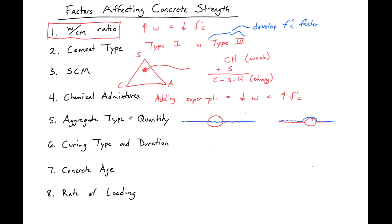We also have curing type and duration. If we moist cure for longer, a higher amount of the cement will hydrate and it'll hydrate at a quicker rate, so we can have improved strengths earlier. Our concrete age will also have an effect — concrete strength develops over time, and we'll look at some relationships to determine concrete strength versus time.